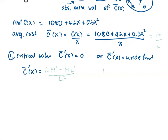For the prep work: the high function is 10,080 + 42X + 0.3X². The derivative d-high is 42 + 0.6X. The low function is the denominator X, so d-low is 1. With all the prep work done, we bring every term back into the quotient rule formula.